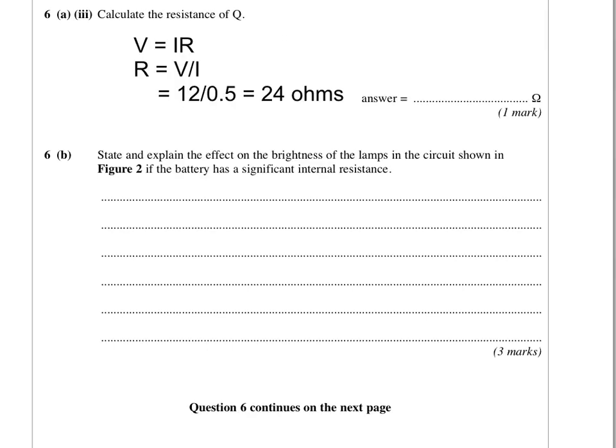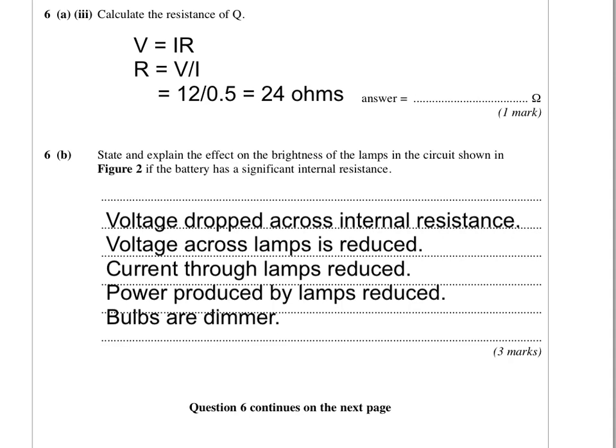On to question B. It says state and explain the effect on the brightness of the lamps if the battery has a significant internal resistance. In the first part, there was no internal resistance. What internal resistance does is essentially use up some of the voltage. Some voltage is dropped across that internal resistance, meaning the voltage for the external part of the circuit is less.